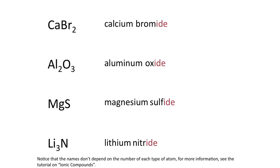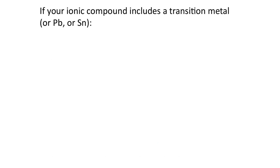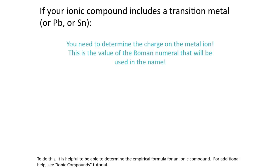Hopefully what you're realizing is that as long as you don't have a transition metal, naming an ionic compound made from only two different types of elements is fairly straightforward: the cation keeps its name, and the ending of the anion gets changed to -ide. We're going to add just one more step when we name ionic compounds that have a transition metal in the formula — and the other two metals that normally need Roman numerals are lead and tin. For these compounds you need to determine the charge of the metal ion.